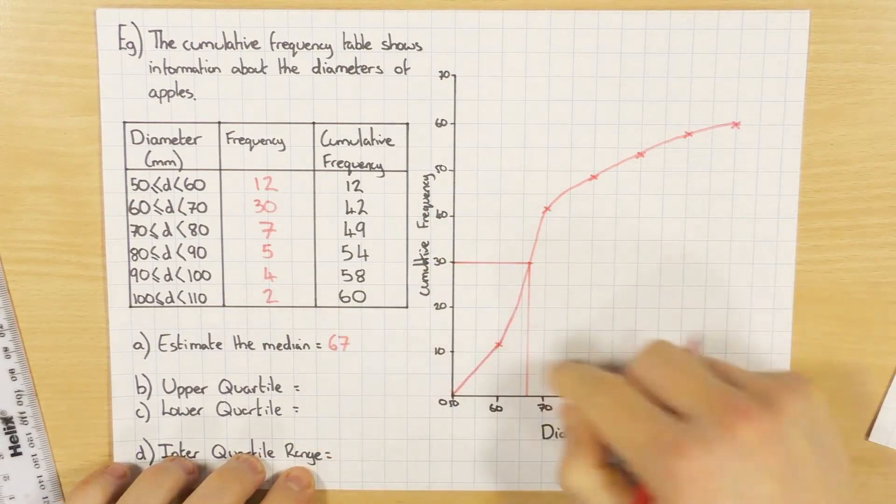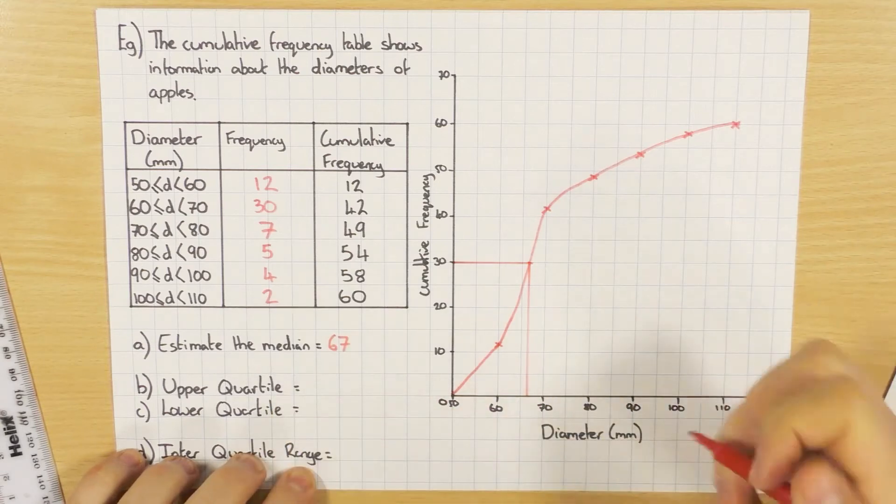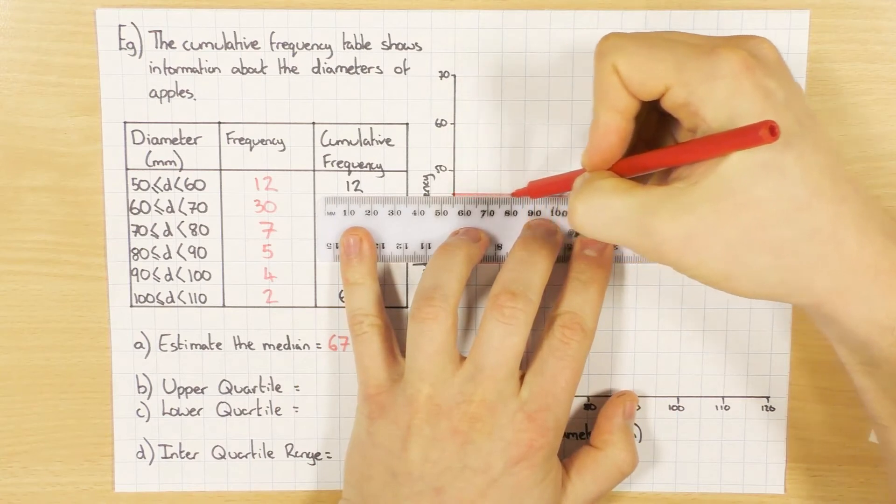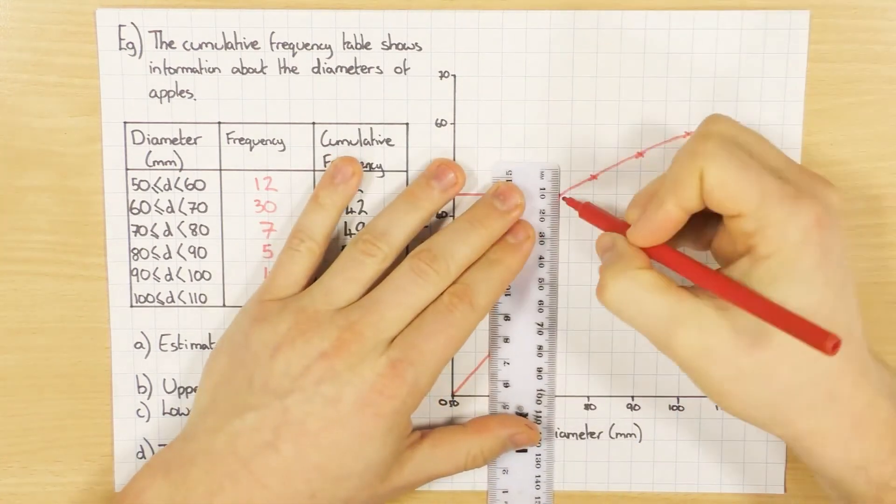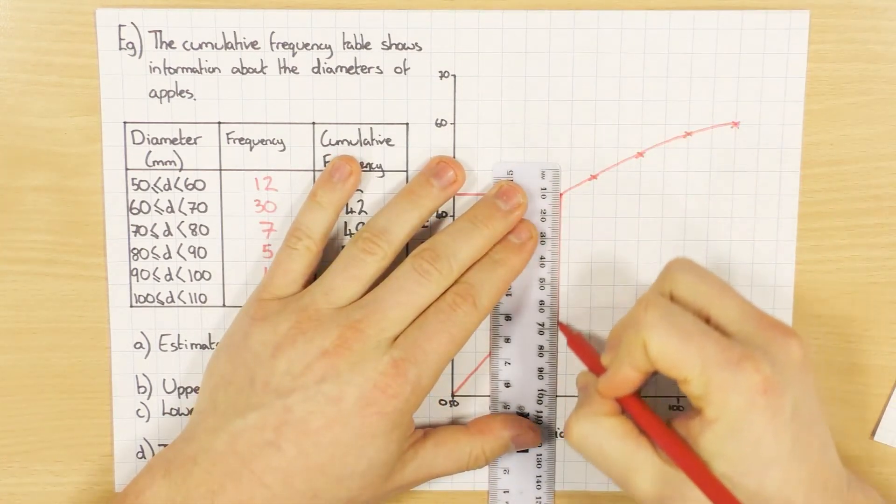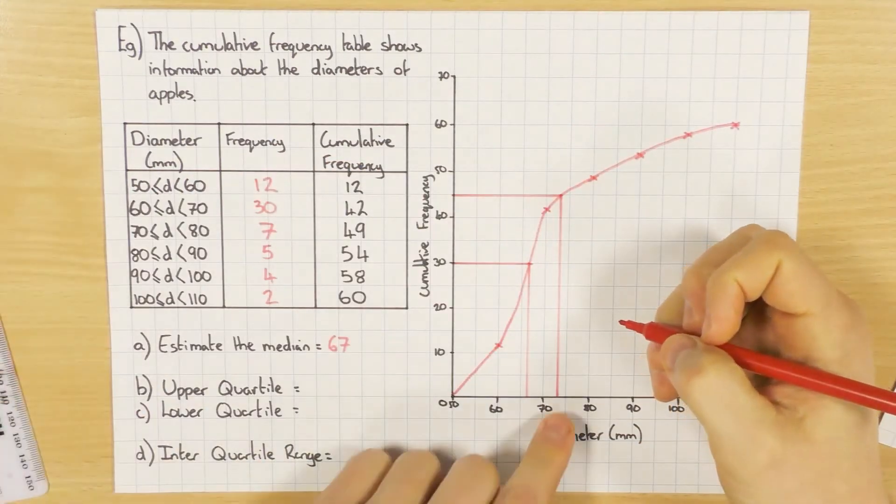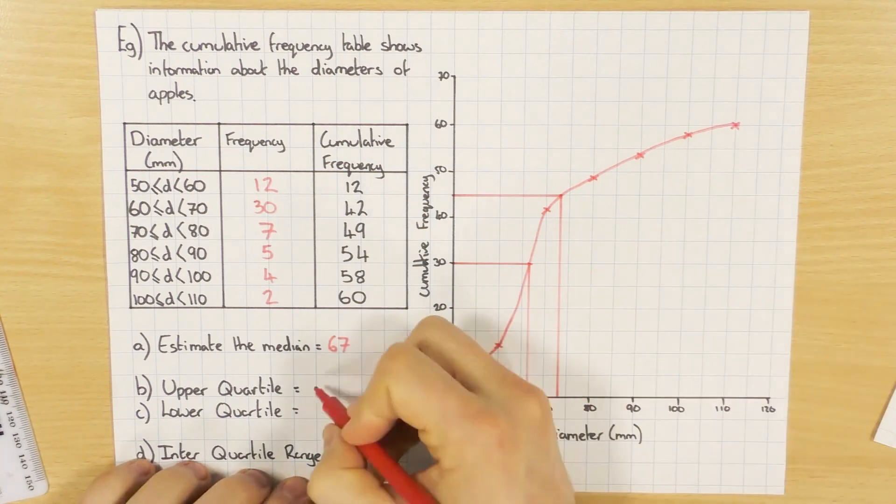Upper quartile, so three quarters of the way, so three quarters of 60 is 45. And then go down, so that's going to be 73, I reckon, it's going to be 73.